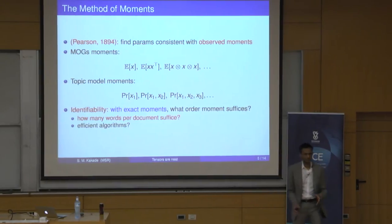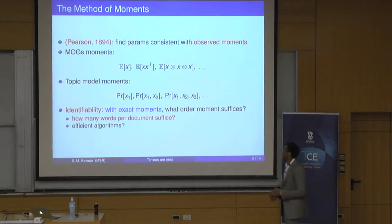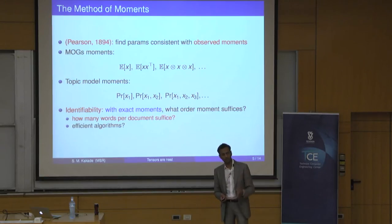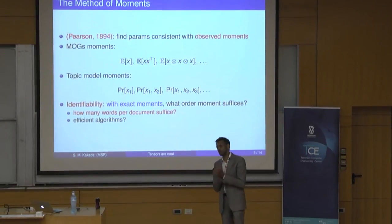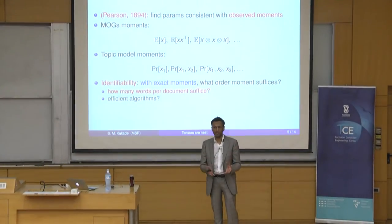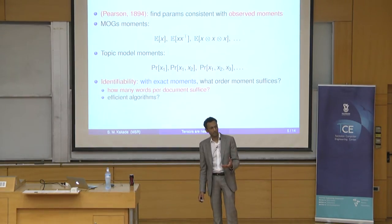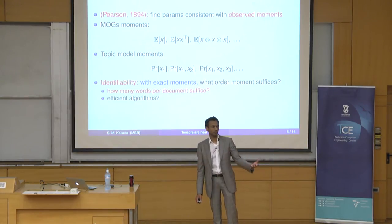Now let's set up the estimation problem. We're going to think about this through a very old lens called the method of moments. This was actually due to Pearson — it preceded maximum likelihood estimation. The idea is very intuitive: you get some data, measure some averages like means and variances, and the idea of the method of moments is to find parameters in your model which are consistent with the moments you observe in the data.